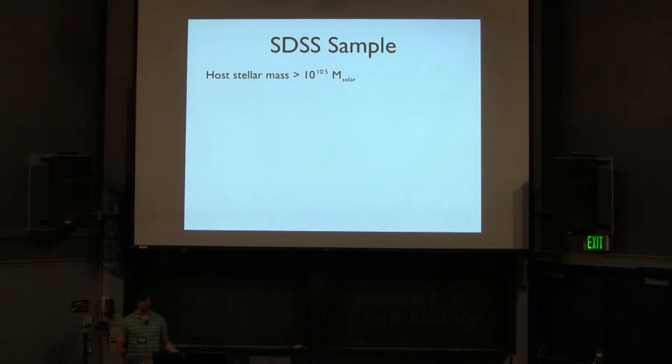So to talk about our sample, we used Sloan Digital Sky Survey. We used the MPA value-added galactic catalog as well as the NYU value-added galactic catalog. And we compiled a list of potential hosts, all galaxies greater than 10 to the 10.5 in solar masses, out to a redshift of 0.03. And then we stipulated that the host had to be isolated.